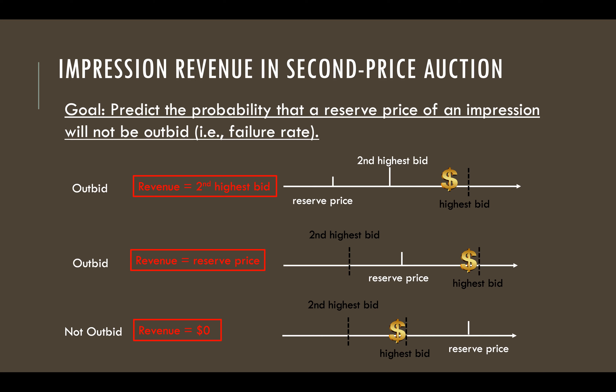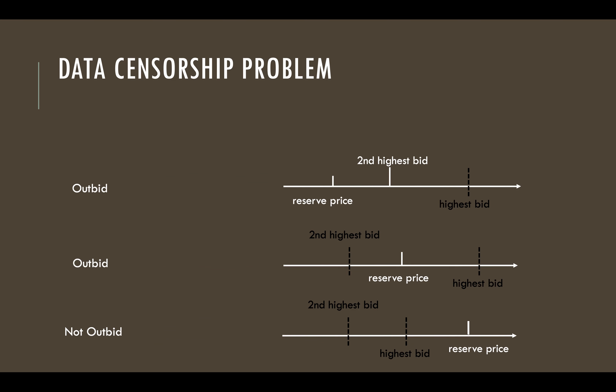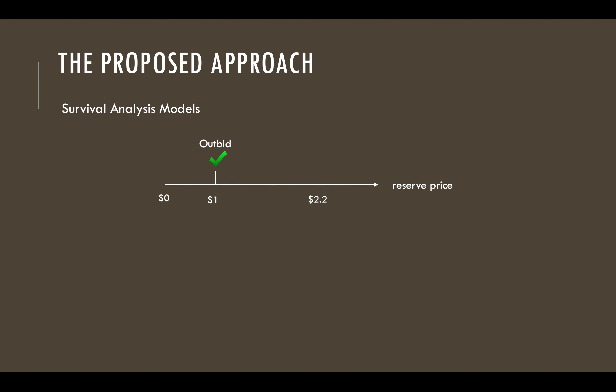Publishers can use our model to further decide how much risk they are willing to take to increase their revenue. However, one of the main challenges is that the highest bids are unknown on the publisher's side. Statistically speaking, the impressions that were outbid are right censored at the revenue, and the impressions that failed to be outbid are left censored at the reserve price.